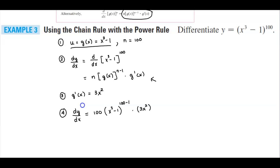So now all we need to do is simplify. So the derivative with respect to x, we have 100 times 3, which is 300. And that's x squared times x cubed minus 1. And the exponent 100 minus 1 is 99.